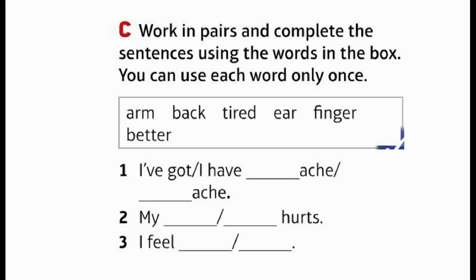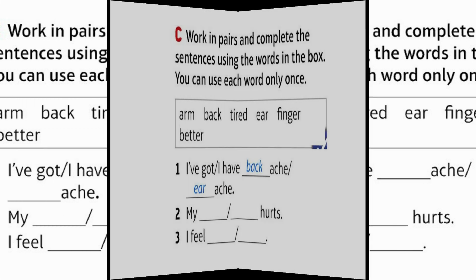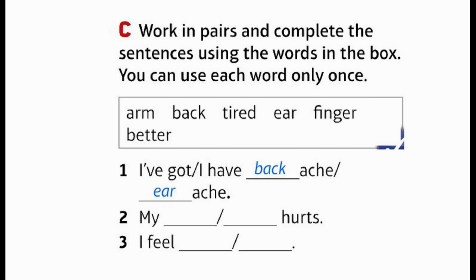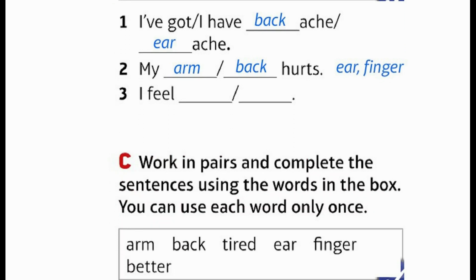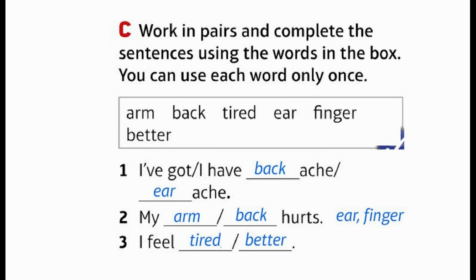Work in pairs and complete the sentences using the words in the box. You can use each word only once: arm, back, tired, ear, finger, better. 1. I've got back/ear ache. 2. My arm/back/ear/finger hurts. 3. I feel tired/better.